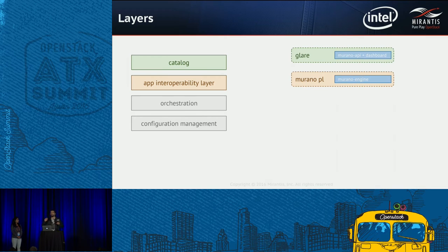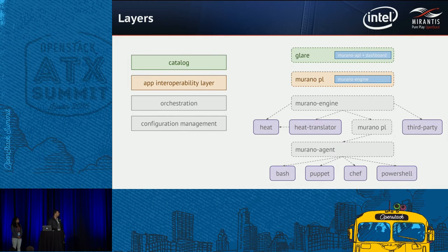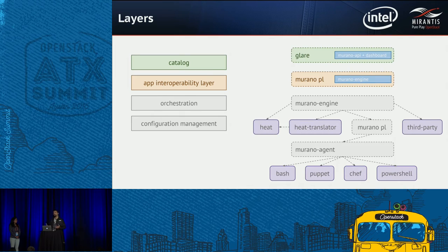Each application provides an interface — workflows and properties — which you can access from other applications, allowing you to combine applications in one stack as truly reusable components, swappable at any point in design time in the dashboard. Murano Engine, which is responsible for the app interoperability layer and orchestration, uses HEAT for resource allocation. We use HEAT translator as a separate engine for deploying Tosca applications, which translates Tosca to HEAT and feeds it in. We also support HEAT templates and HEAT as a solo orchestrator in Murano.